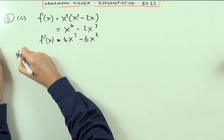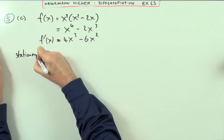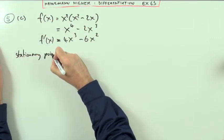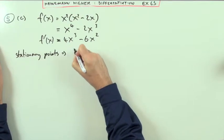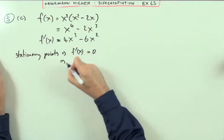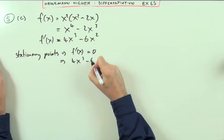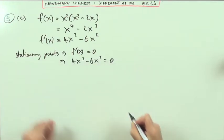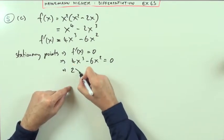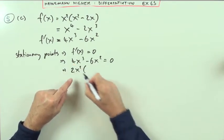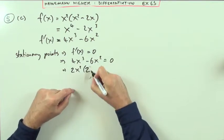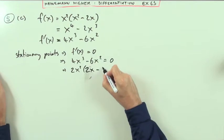Stationary points means that this derivative should equal 0 at them, in which case I'm required to solve this expression equal to 0. And this factorizes nicely. In fact, 2 comes out as well as x squared. So 2x squared can come out, leaving you a 4, leaving you a 2x minus a 3.